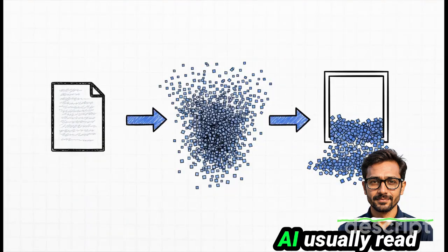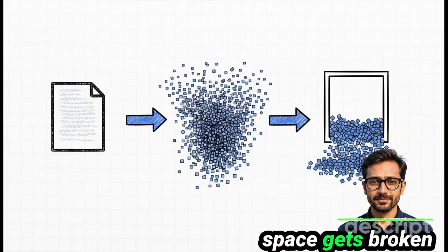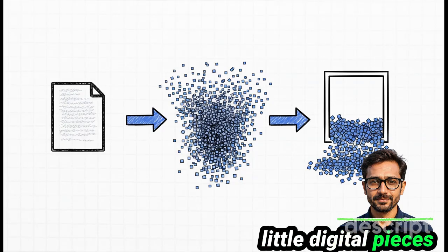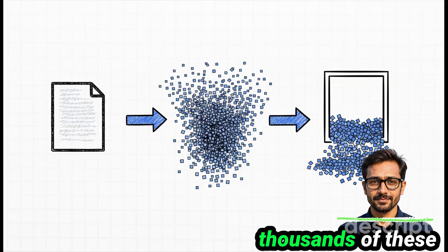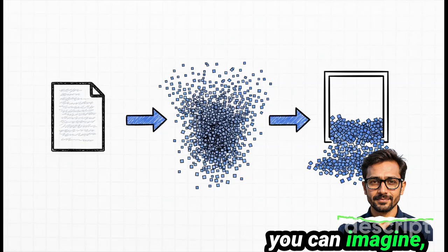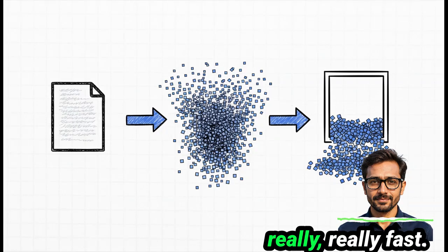You see, the way AIs usually read is by chopping everything up. Every word, every comma, every space gets broken down into these little digital pieces called tokens. A single page can easily turn into thousands of these things, which as you can imagine, fills up that tiny short-term memory, that context window really, really fast.